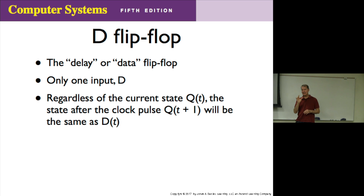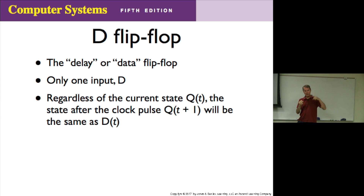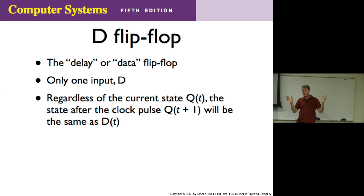Here's what's interesting about the D flip-flop — there's only one input. D is kind of the way to envision one bit of storage. If you have a zero coming in and you clock it, you want to store it, so that should make the state zero. And if you have a one coming in and you clock it, what should the state be? One. It's like whatever input comes in, you want the state to be whatever the input is, regardless of what the current state is. You want the next state to be exactly what the data line says.